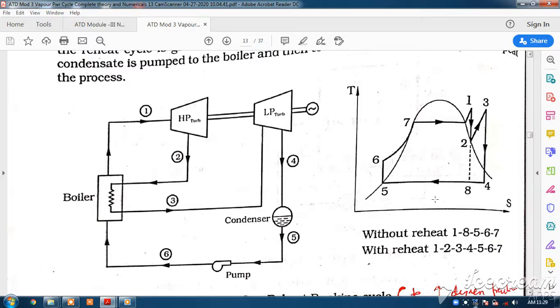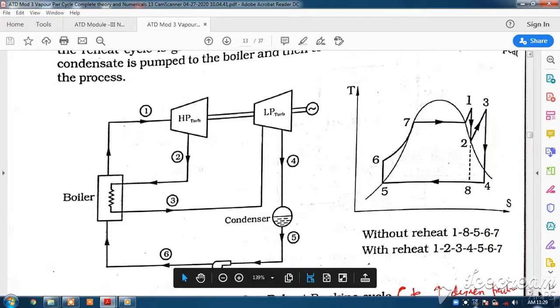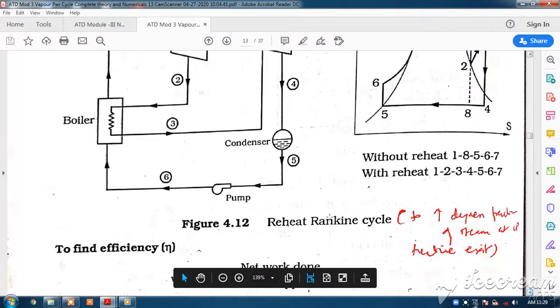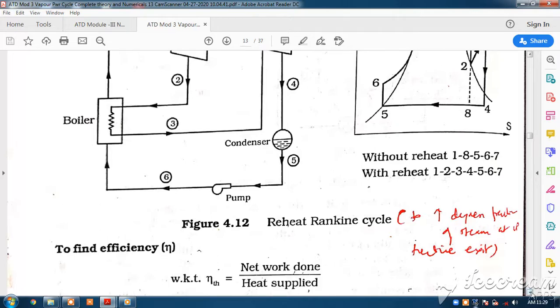The more we go towards the right side on the entropy axis, the steam leaving the turbine is more dry. The idea of reheat cycle is to improve the dryness fraction of the steam at the low pressure turbine outlet. The turbine outlet is more dry when compared to condition 8 without reheat.